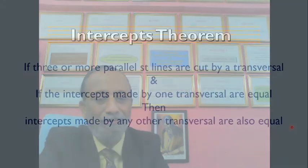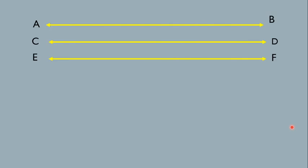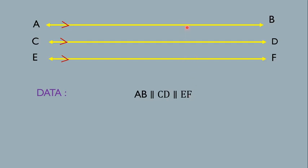Let us go to the figure part now. Here we have a minimum of 3 lines: AB, CD, and EF, and these 3 lines are all parallel to each other. The arrow marks indicate that they are parallel. So the data is: AB is parallel to CD, and CD is parallel to EF. These are the 3 parallel lines — minimum 3, maximum any number.